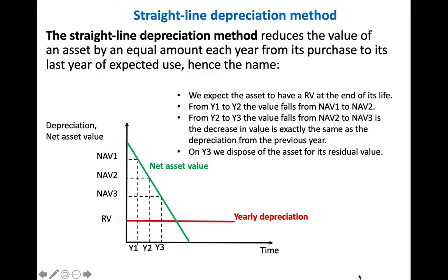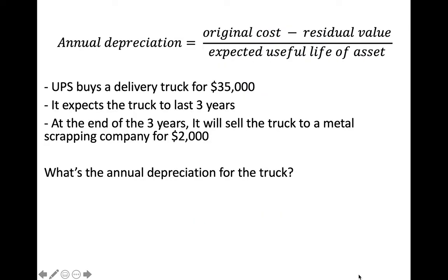The straight-line depreciation method assumes that the value of the asset will fall along its design life proportionally to the number of years — that is, the asset will lose the same value every year. Therefore, the annual depreciation is calculated by dividing the cost of the asset by the number of years we aim to keep it in our books.